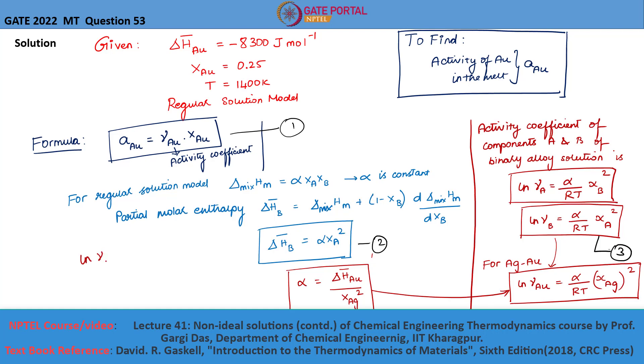ln gamma_AU equals partial molar enthalpy of gold divided by RT. Let us substitute the values in this equation.